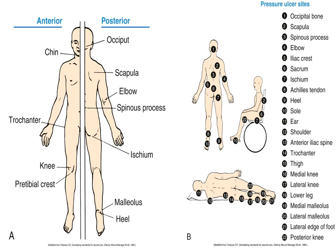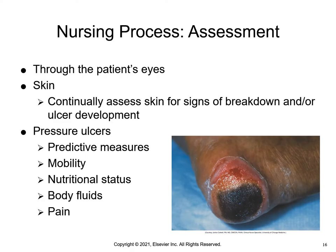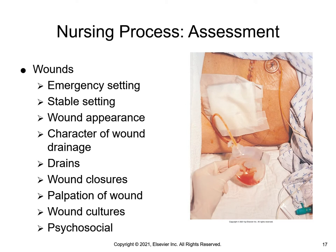A shows the bony prominences that most frequently underlie a pressure injury. B shows the pressure injury sites. When pressure injuries or chronic wounds develop, the course of treatment may be lengthy and costly; the patient and family need to be involved with wound care management. The nurse should perform skin assessment whenever initiating care and then a minimum of once a shift. When identifying the presence of a skin wound or pressure injury, a closer assessment is necessary. The nurse should assess the type of tissue in the wound base to plan appropriate interventions.